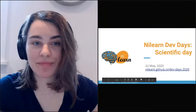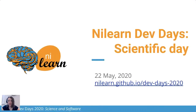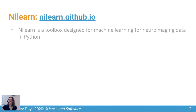Let me just quickly share my screen. Nilearn is a toolbox designed for machine learning for neuroimaging data in Python. It's been around for a little while now and has gained quite a bit of traction in the community for this use, and also for handling neuroimaging data more broadly for things like plotting as well.